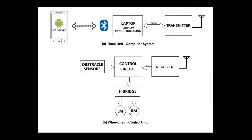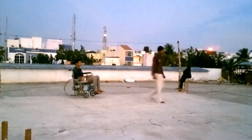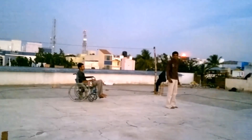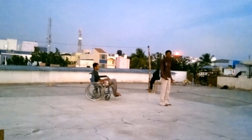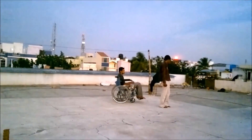When the caregiver wants to take the patient out, it isn't necessary for them to push the wheelchair. Instead, this system can track the caregiver and follow.